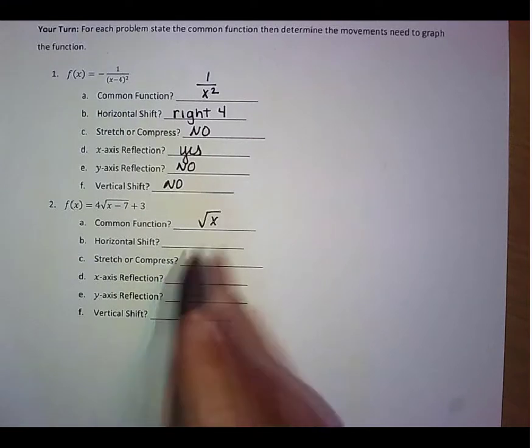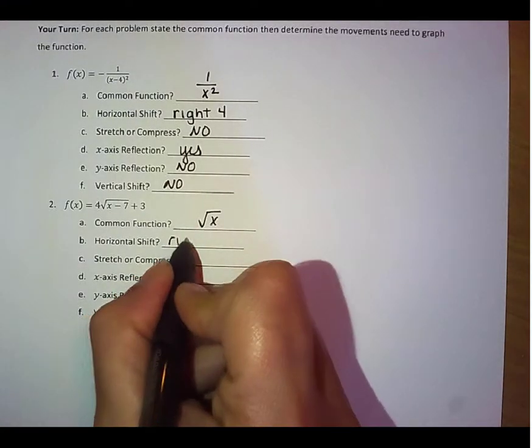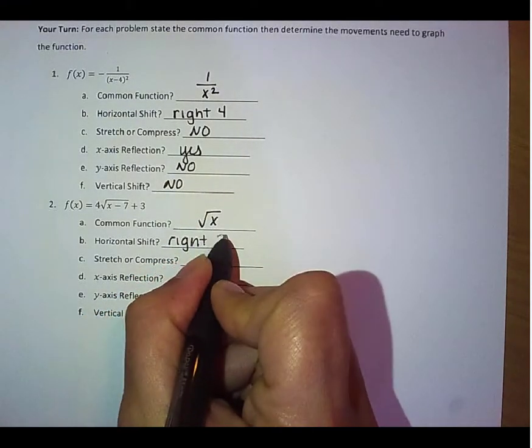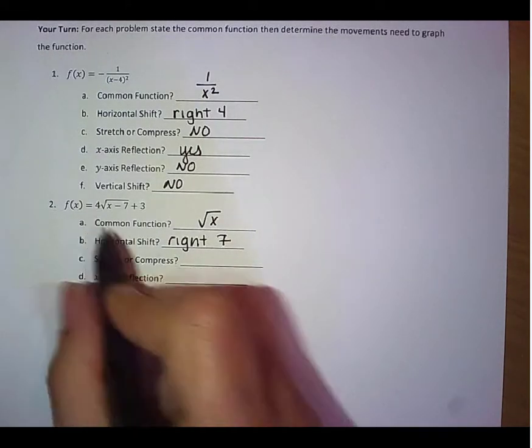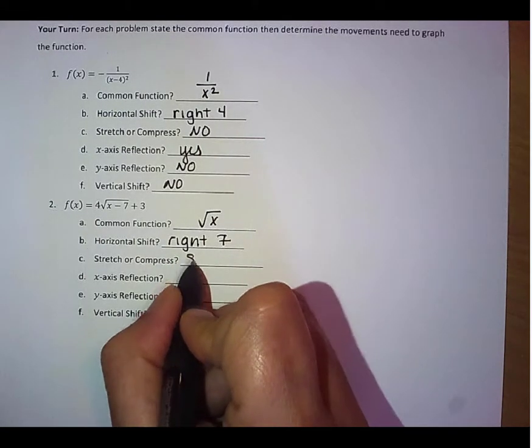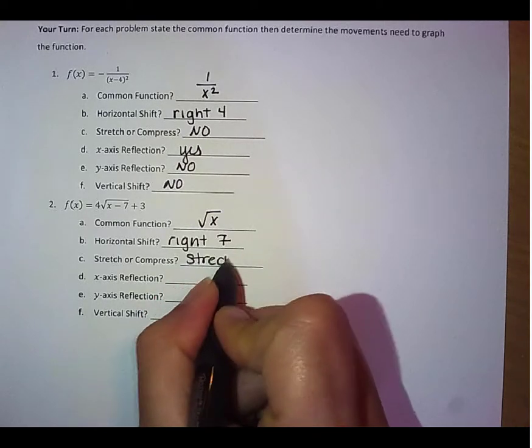We do indeed have a horizontal shift. We're going to take this to the right 7. We have a stretch or compress. Since that is a positive 4, we are going to stretch our graph by 4.